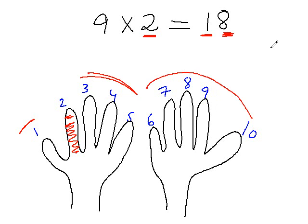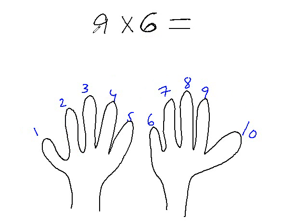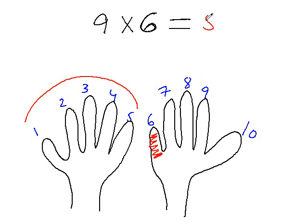Isn't that amazing? Let's do another one. What is 9 times 6? Just fold the sixth finger of your hand. Now you have 5 fingers left here — your entire hand — so just put 5 here. And you have 4 fingers left here, so put 4 here. The answer is 54.